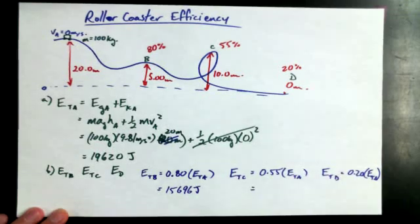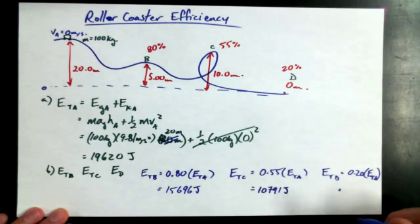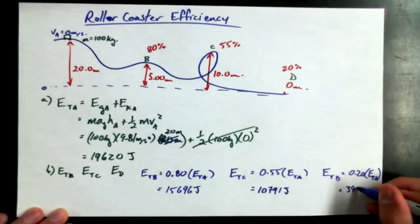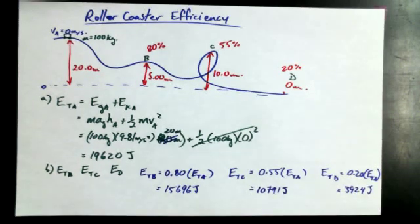What about in this position here? Can somebody tell me the total energy at C and then D? ETC would just be 0.55 times ETA. And ETD would be 0.20 times ETA. I believe it's 10,791. Yeah, okay, thank you. It would be 3,924. Beautiful. All right, that's the total mechanical energies at these different points for the percent efficiency that we're going to claim.